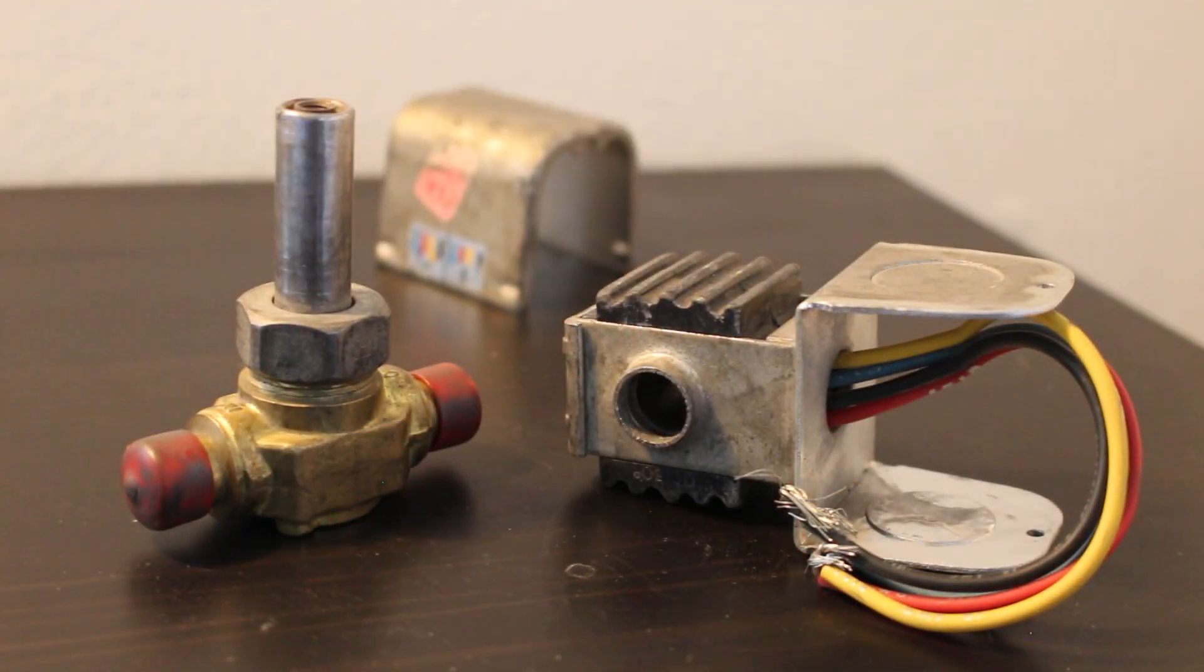The plunger of the solenoid is used to lift the valve off of its seat. The valve is held closed by a spring when it's in its normal or de-energized position, and when the coil is energized, the plunger lifts the valve off its seat and lets liquid or gas flow from the inlet to the outlet.